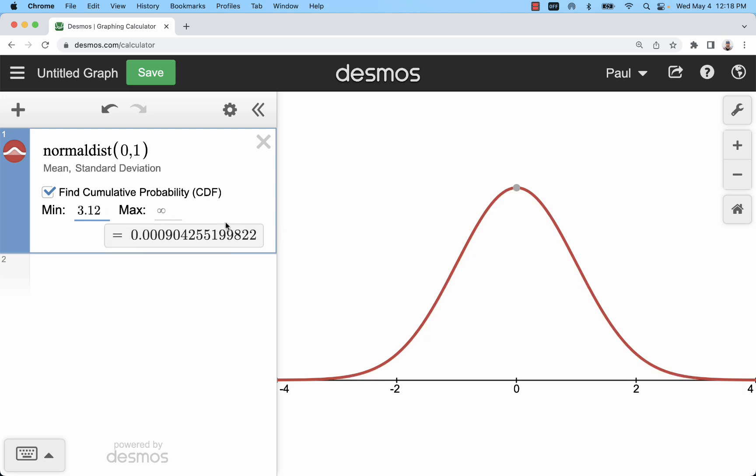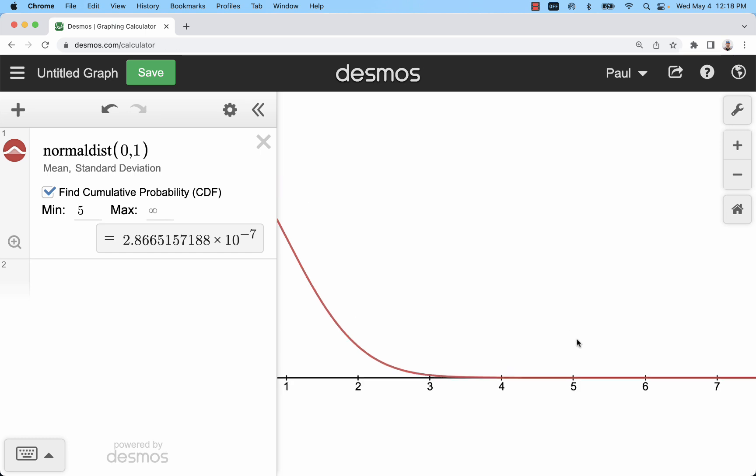Now here's a nice thing about Desmos that you can't do in Statlet is you can put in really large numbers here. So I'm looking at five standard deviations to the right of the mean.